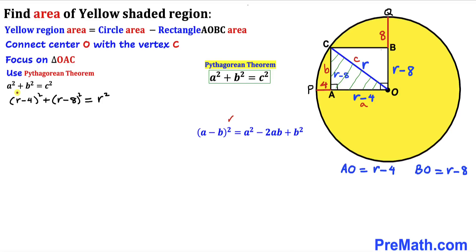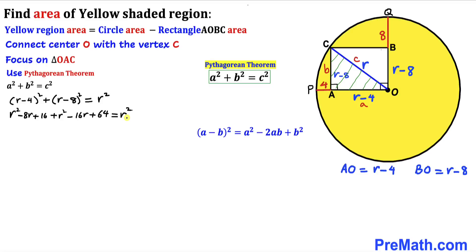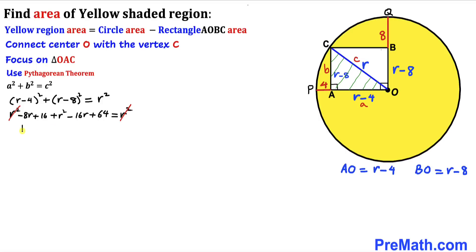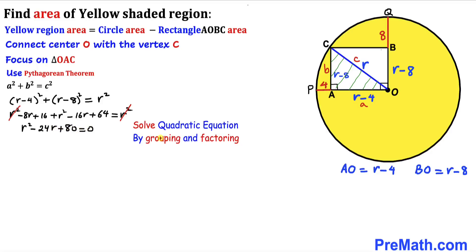Applying the expansion to both binomials on the left-hand side and combining like terms — the two r² terms on the left cancel with the right — we arrive at r² − 24r + 80 = 0.